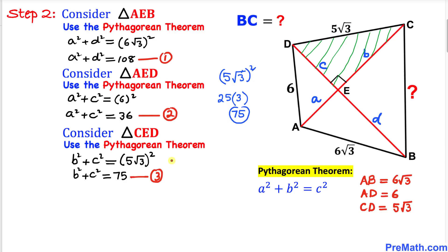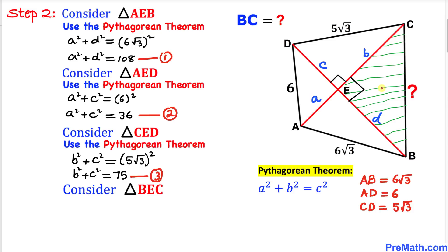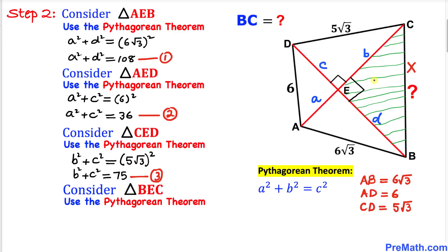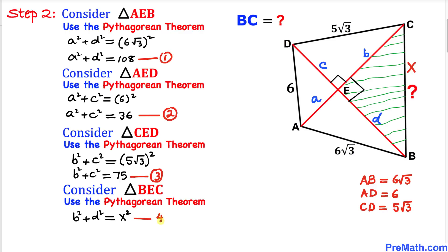Finally, let's focus on triangle BEC. Since side BC is unknown, let's call it x. This is a right triangle, and x is the longest leg. Applying the Pythagorean theorem gives us b² + d² = x². We'll call this Equation 4.